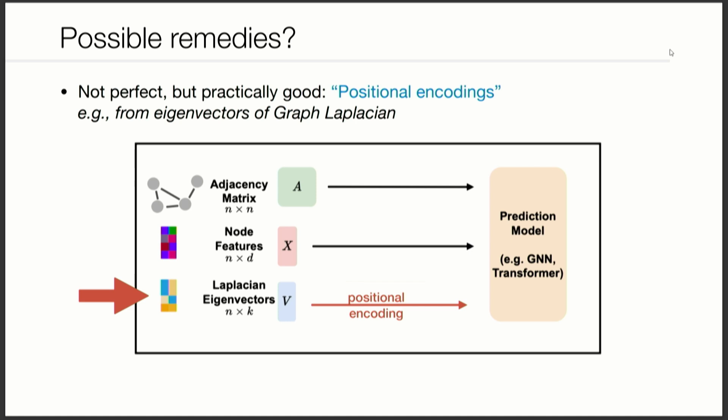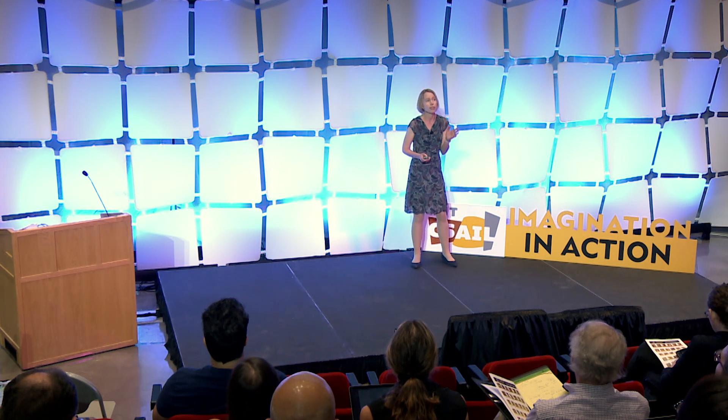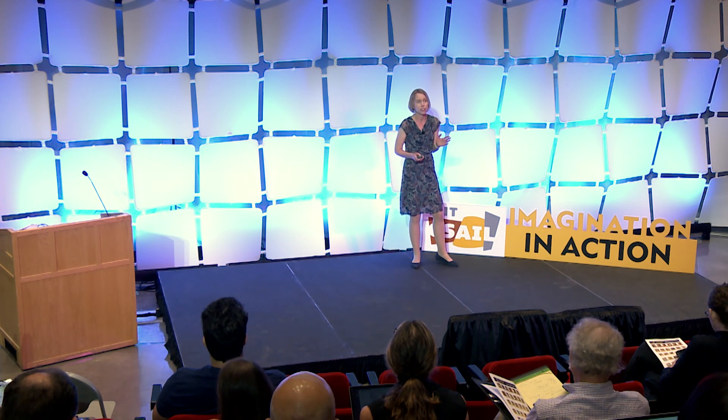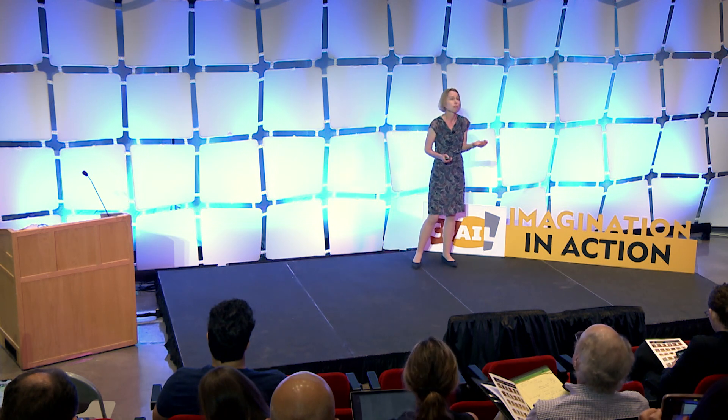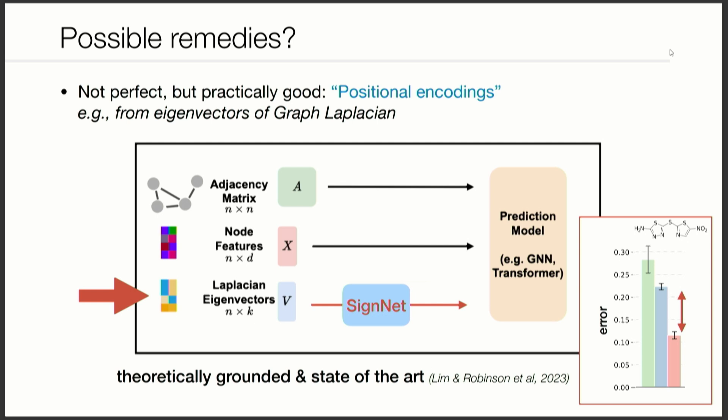This is usually done with linear algebra: we compute a certain matrix about the graph and look at its eigenvectors. The complication is that eigenvectors are specific mathematical objects that need to be treated correctly, otherwise you lose robustness. In a recent project we looked at the math and derived a plug-in architecture that can provably treat eigenvectors the right way, achieving state-of-the-art positional encoding in both theory and practice.